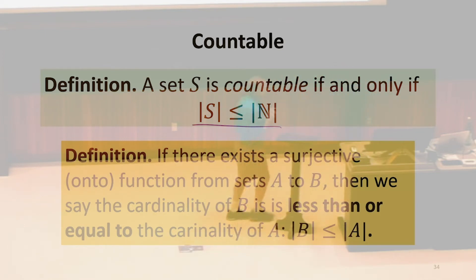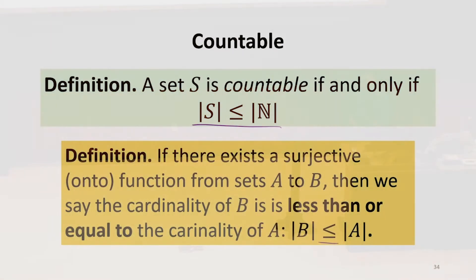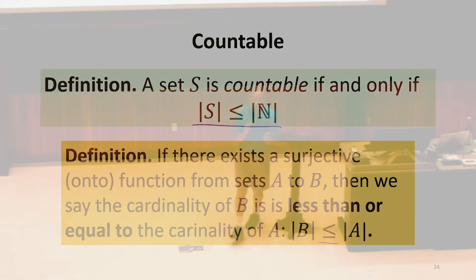Another way of stating that from our definition of less than or equal to is that means there's some way we can map the natural numbers that covers every element of the set. If we can do that, we know the set is not bigger than the natural numbers.